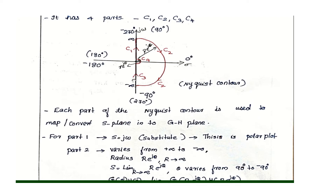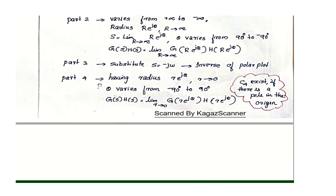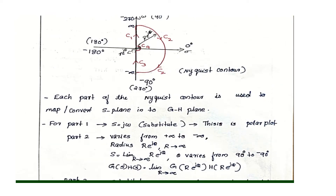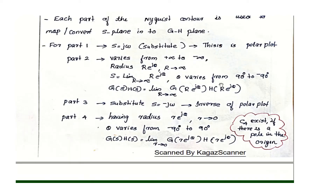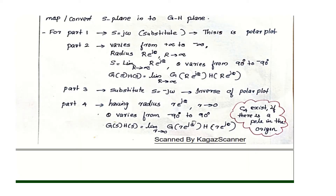C3 is the mirror image of the polar plot (C1). The last part, C4, is a small semicircle of small radius r, with angle ranging from minus 90 to plus 90 degrees. The value of C4 changes accordingly.